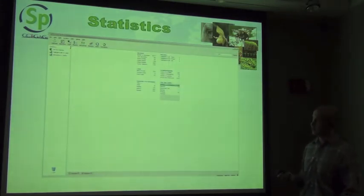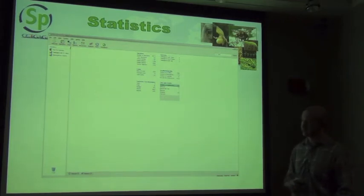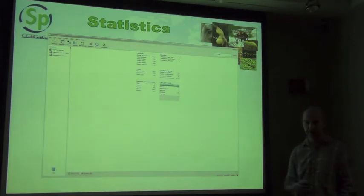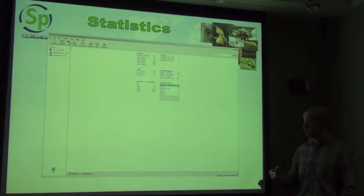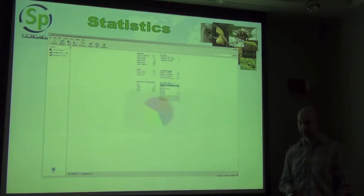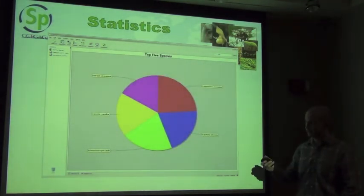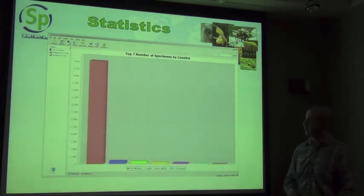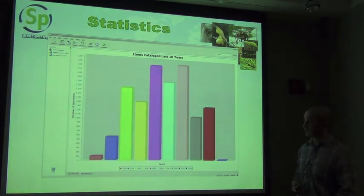There is also a statistics page built into Specify that gives you brief statistics about your collection — things that collection managers always have to report to administration. You can see how many loans you've processed, how many specimens you've catalogued, how many overdue loans you have, and how many specimens you have from a particular genus. There are also charting features built in, including the top five species, the top seven number of specimens by country, and items catalogued in the last ten years to show the growth of your collection.